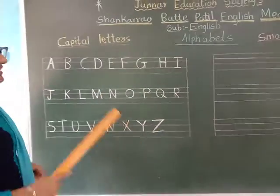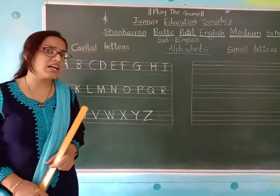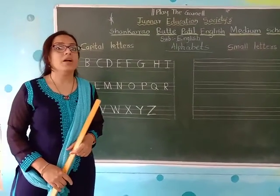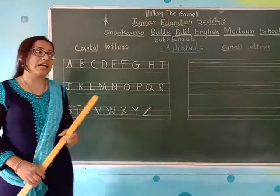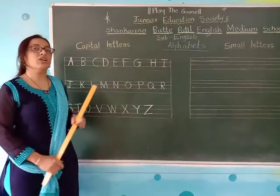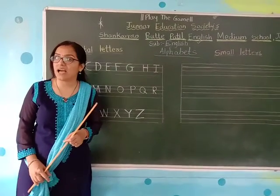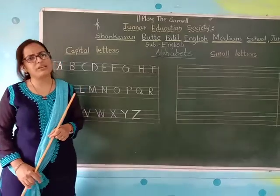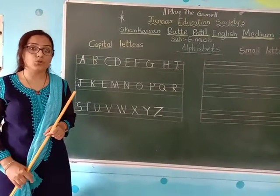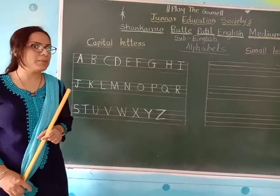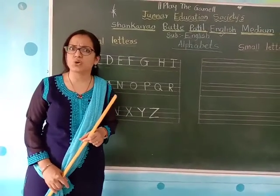So many students have done the homework and posted it on the group. But some students have not completed the homework. I said to write capital letters C to Z, five times — so at least you should write three times or two times. You should be obedient.